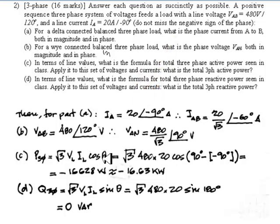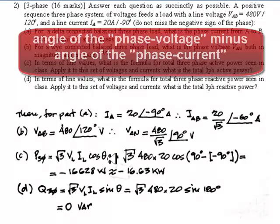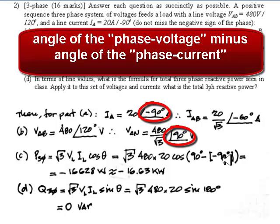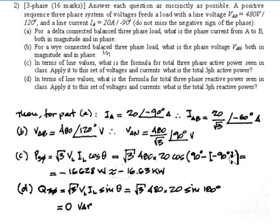Now, cosine(θ) — what is that angle? It is the phase of the voltage minus the phase of the current in the same branch. For the Y case, the phase voltage VAN is at 90° and the phase current (which equals the line current) is at −90°. So θ = 90° − (−90°) = 180°. Cosine(180°) = −1, giving an absorbed power of −16.6 kilowatts. We can verify using delta quantities: phase of VAB = 120°, phase of IAB = −60°, so θ = 120° − (−60°) = 180°. Cosine(180°) = −1, giving the same result.